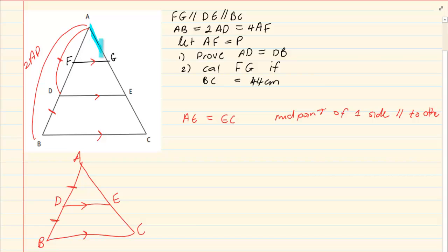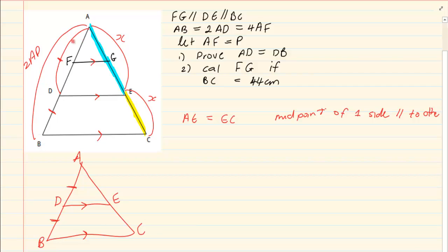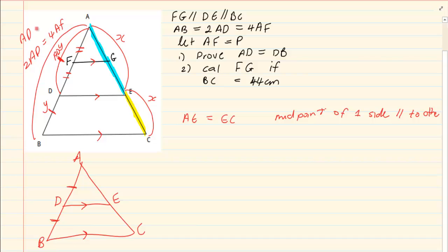Now I have that AE is equal to EC — you can make it X and X. We've got that AB is equal to 2 of AD, so that means AD is Y and DB is Y, because it cut it exactly in half. Then they said 2 of AD is equal to 4 of AF. So it's the same thing as saying AD is equal to 2 of AF. If AD is equal to 2 of AF, then that means AF is equal to FD.